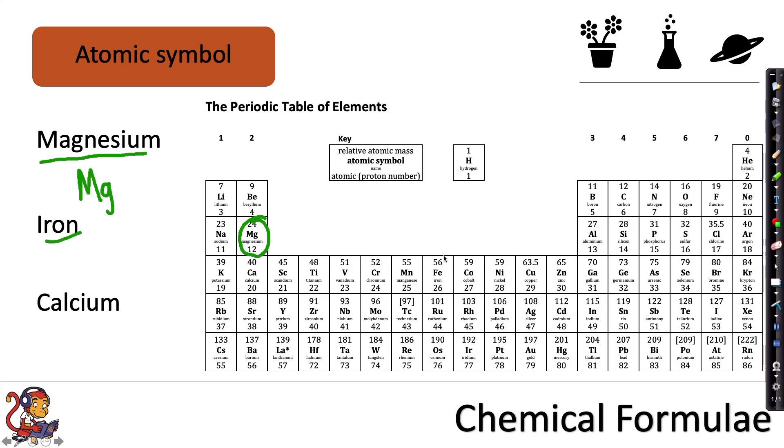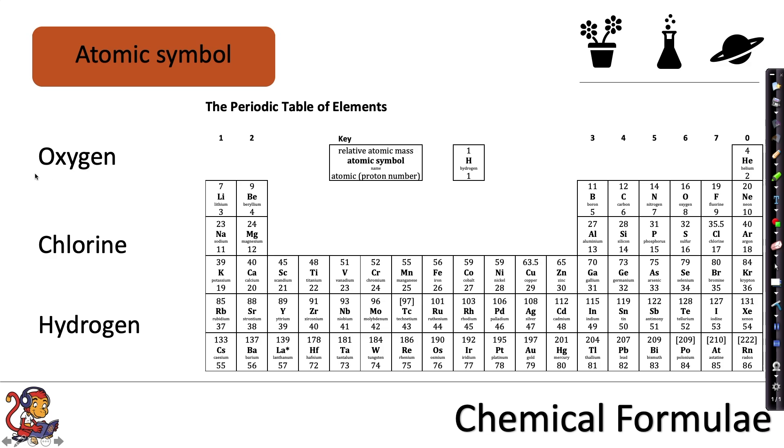Iron has the symbol Fe, capital F lowercase e. And calcium has the symbol Ca. And for nonmetals, for example, oxygen has the atomic symbol O. Chlorine, the symbol is capital C lowercase l. And hydrogen, the symbol is capital H.